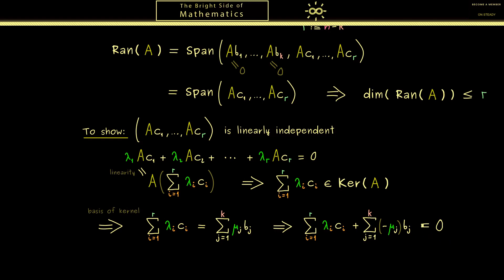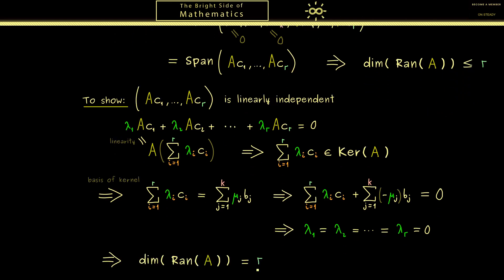Hence, this means a linear combination for the zero vector is only possible with vanishing coefficients. In particular, we can conclude that all the lambda factors here are actually zero. And indeed, this is exactly what we wanted to show. Because with this result, we see only the trivial linear combination here is possible, which means that this family is indeed linearly independent. And with this result, we can conclude that the dimension of the range of A is indeed exactly r. In other words, the rank of the matrix A is r and the rank-nullity theorem is proven.